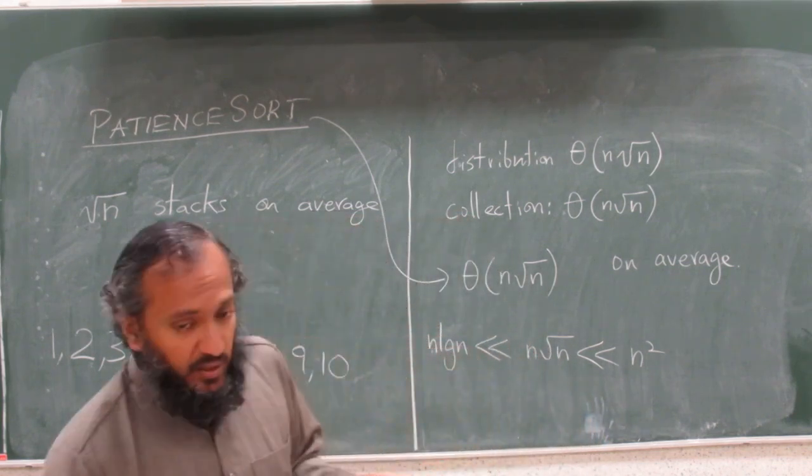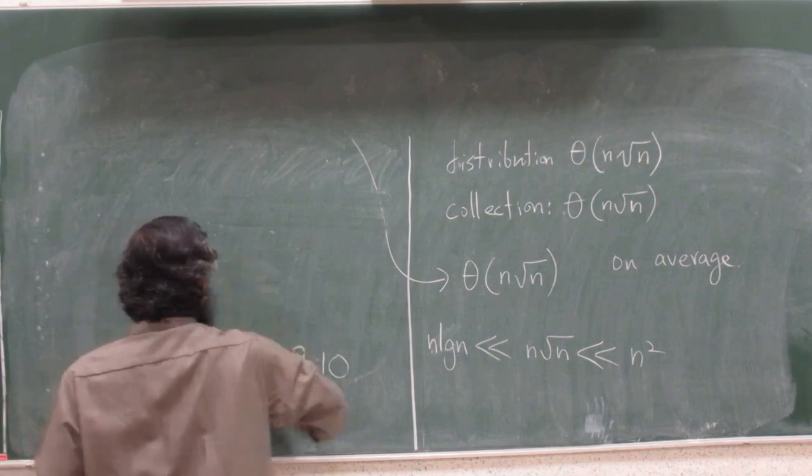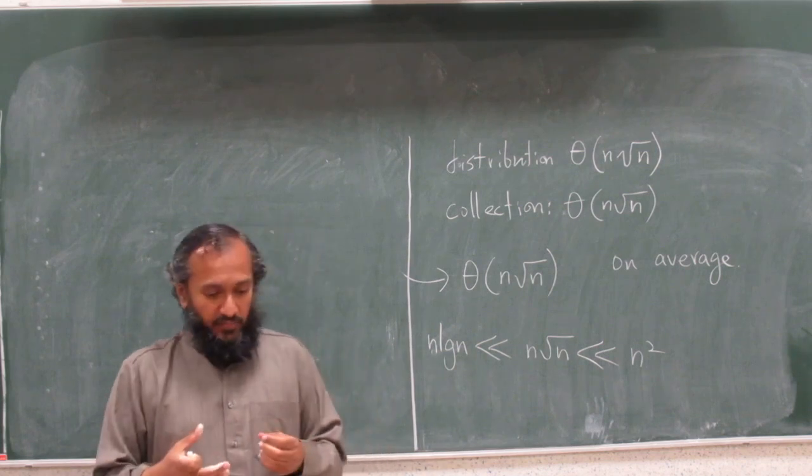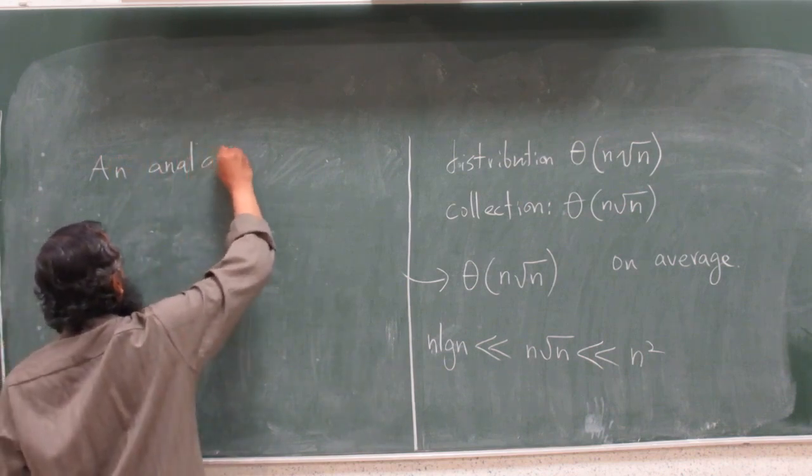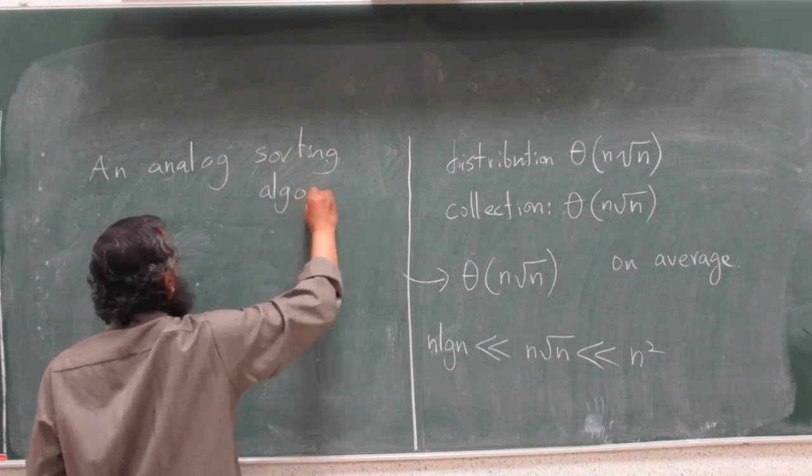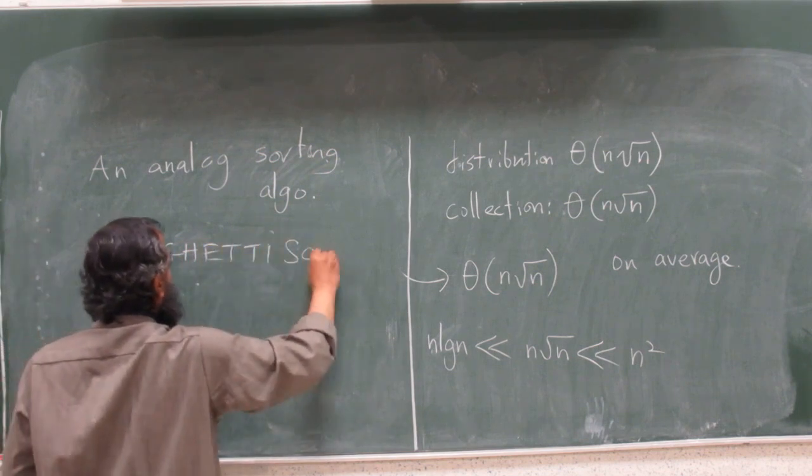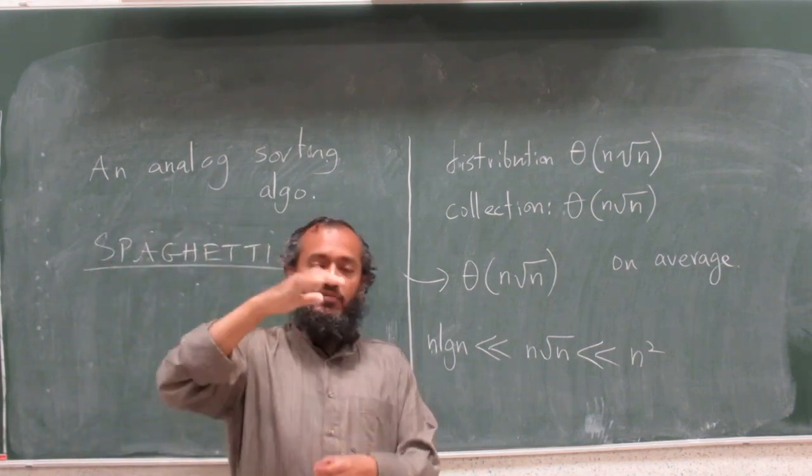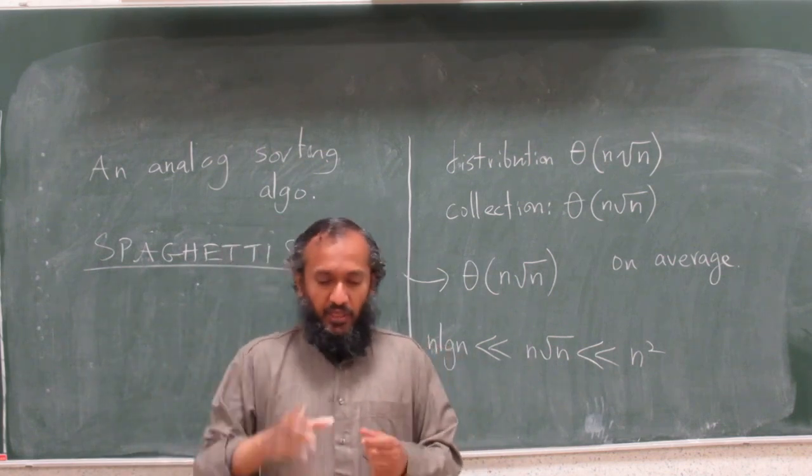To finish the discussion of sorting, we talked about the analog situations. Let me talk about one more algorithm, but this time it is purely an analog algorithm. Imagine you have n numbers to sort and imagine - this is an analog sorting algorithm. Let me talk about spaghetti sort. This is an analog algorithm. So you have 100 spaghettis. They are all different heights, okay? Or maybe some are the same heights, it does not matter. So each height represents a number, right?